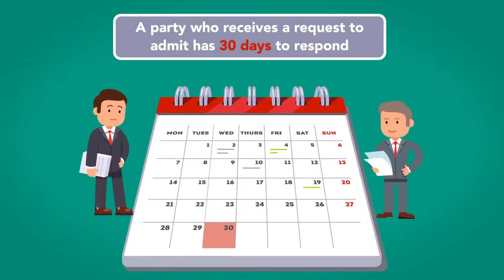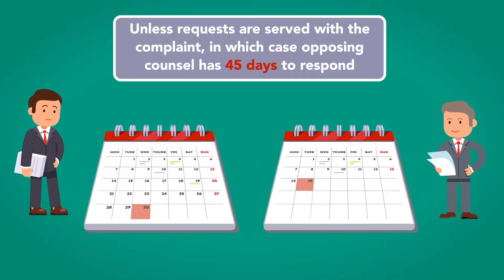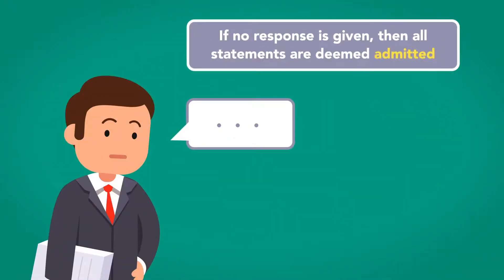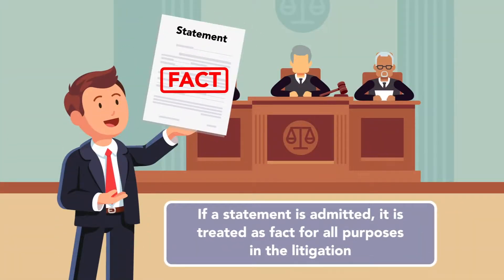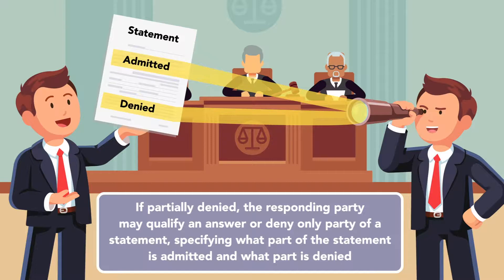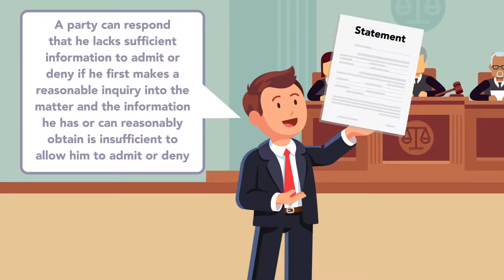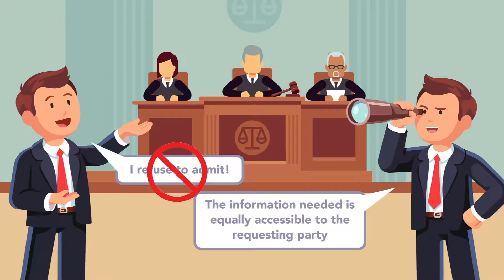A party who receives a request to admit has 30 days to respond, unless requests are served with the complaint, in which case opposing counsel has 45 days to respond. If no response is given, then all statements are deemed admitted. If a statement is admitted, it is treated as fact for all purposes in the litigation. If partially denied, the responding party may qualify an answer or deny only part of a statement, specifying what part is admitted and what part is denied. A party can respond that he lacks sufficient information to admit or deny if he first makes a reasonable inquiry into the matter, and the information he has or can reasonably obtain is insufficient to allow him to admit or deny. The responding party cannot refuse to admit or deny simply because the information needed is equally accessible to the requesting party.